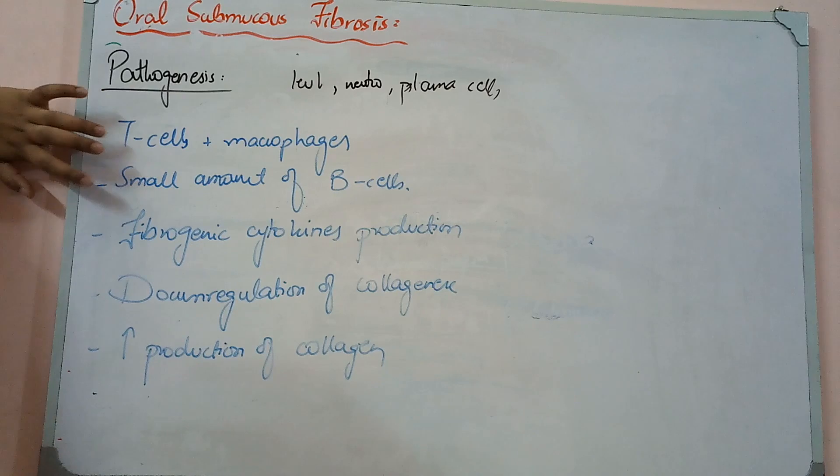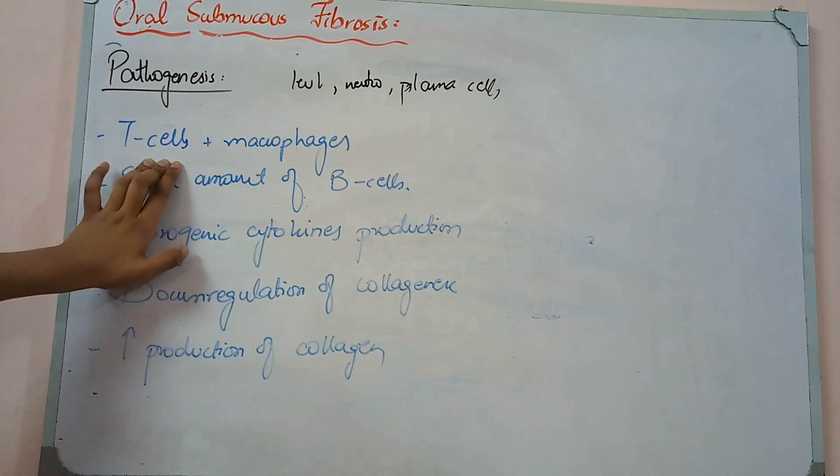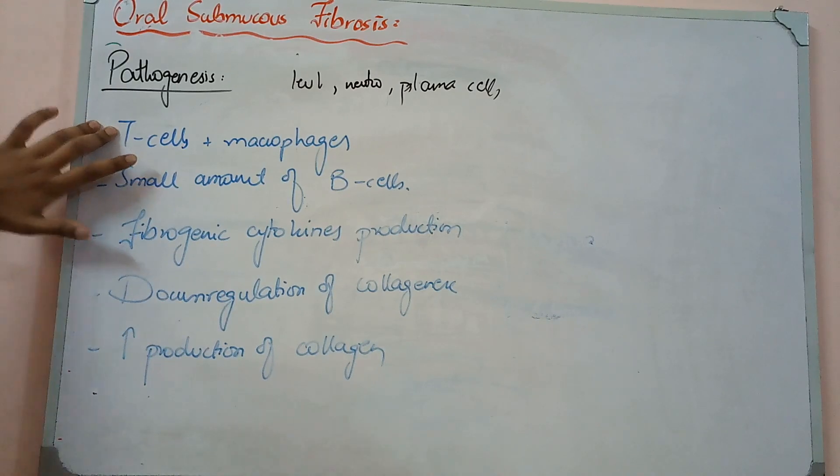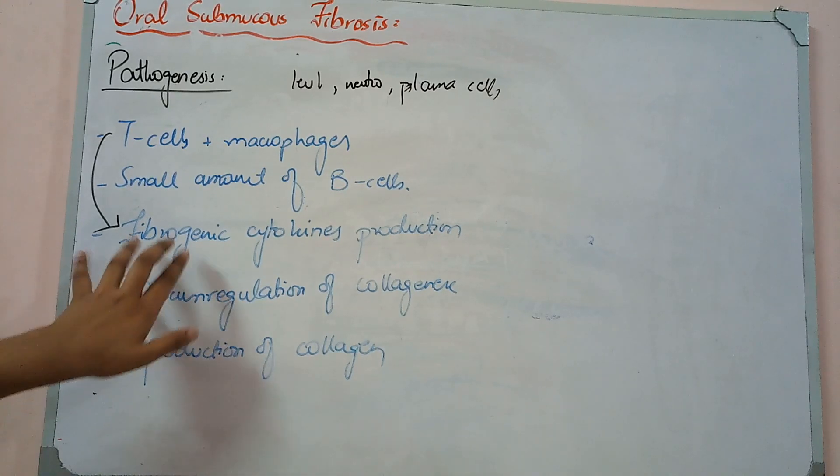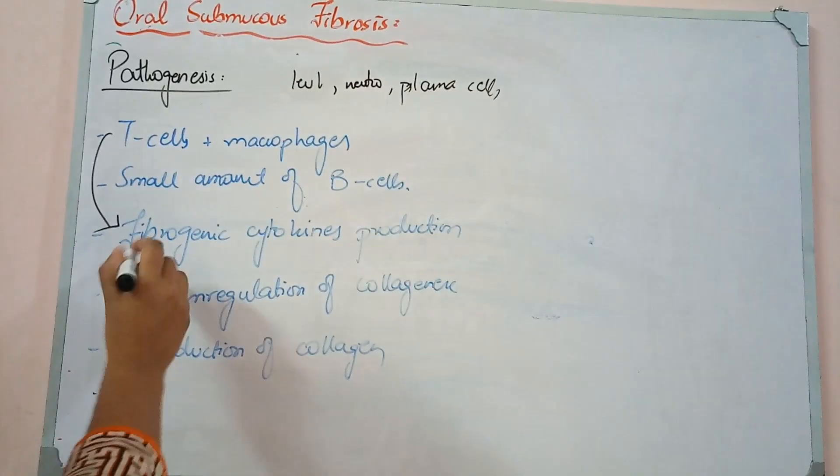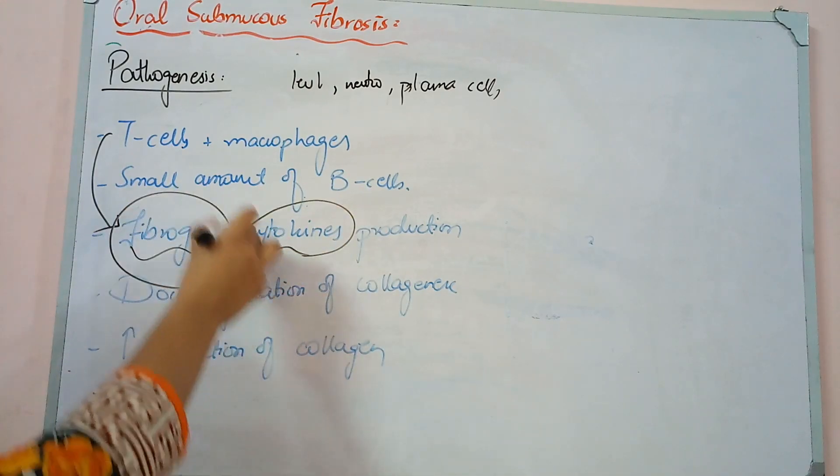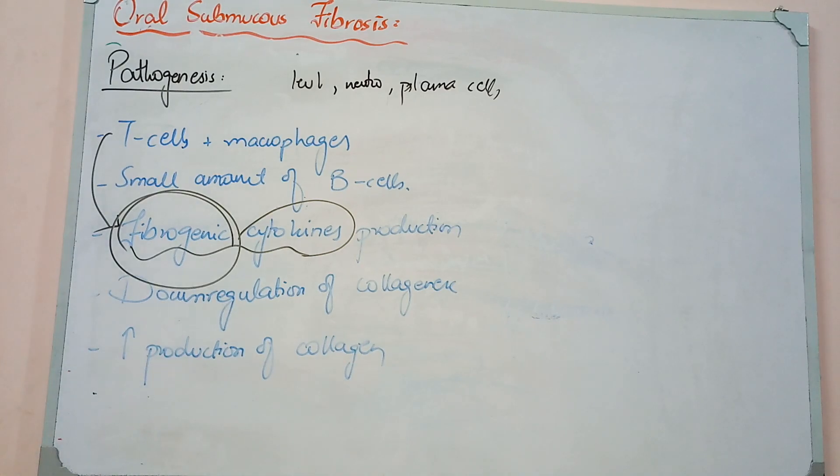T cells and macrophages are mainly present. They produce cytokines, which are basically proteins responsible for growth processes. They produce fibrogenic cytokines, which cause fibrosis. How does fibrosis develop? First, collagen production directly increases.